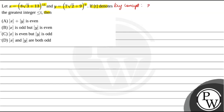The binomial expansion formula is: (x + y)^n = C(n,0)·x^n·y^0 + C(n,1)·x^(n-1)·y^1 + ... + C(n,n)·x^0·y^n.